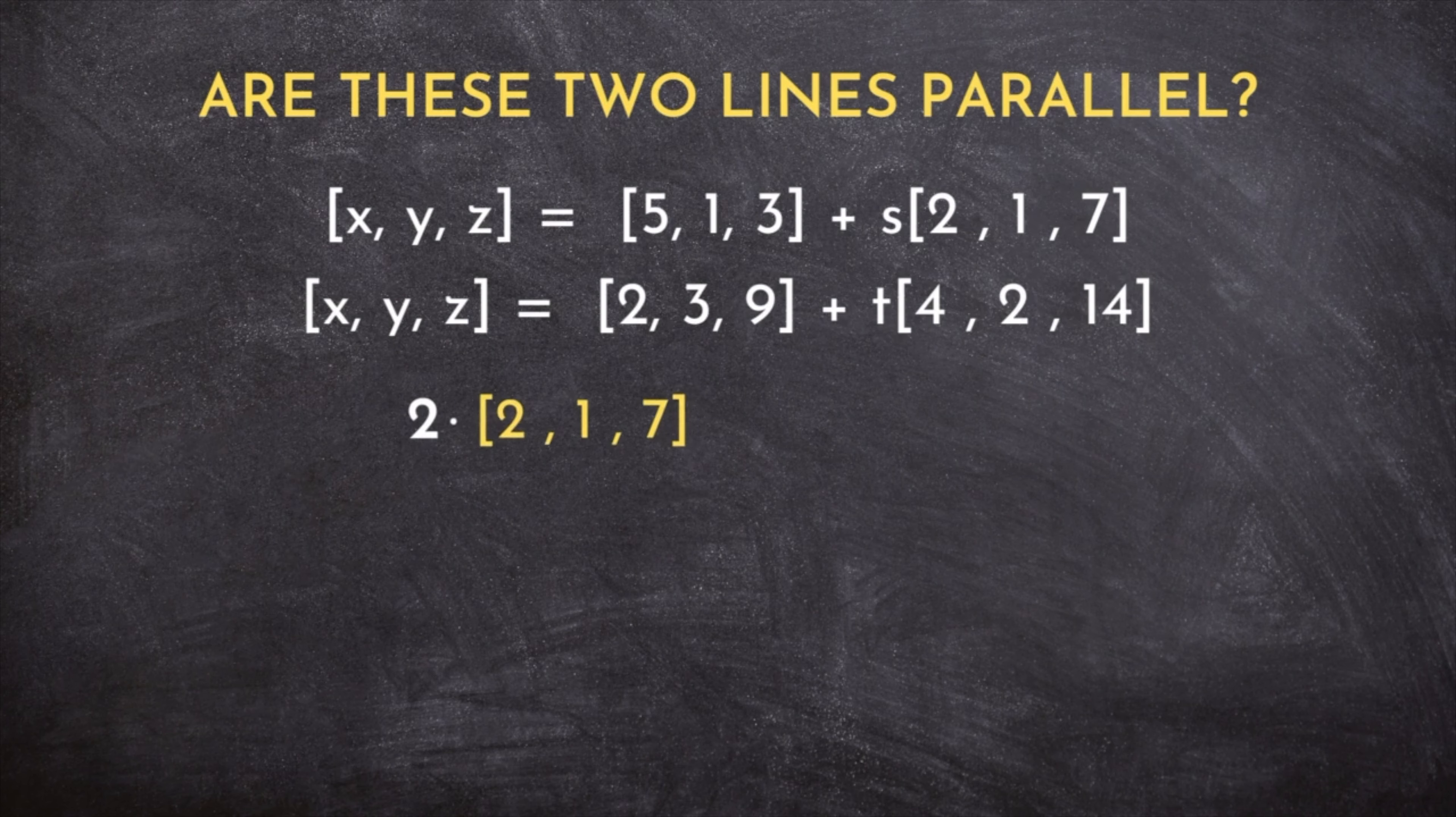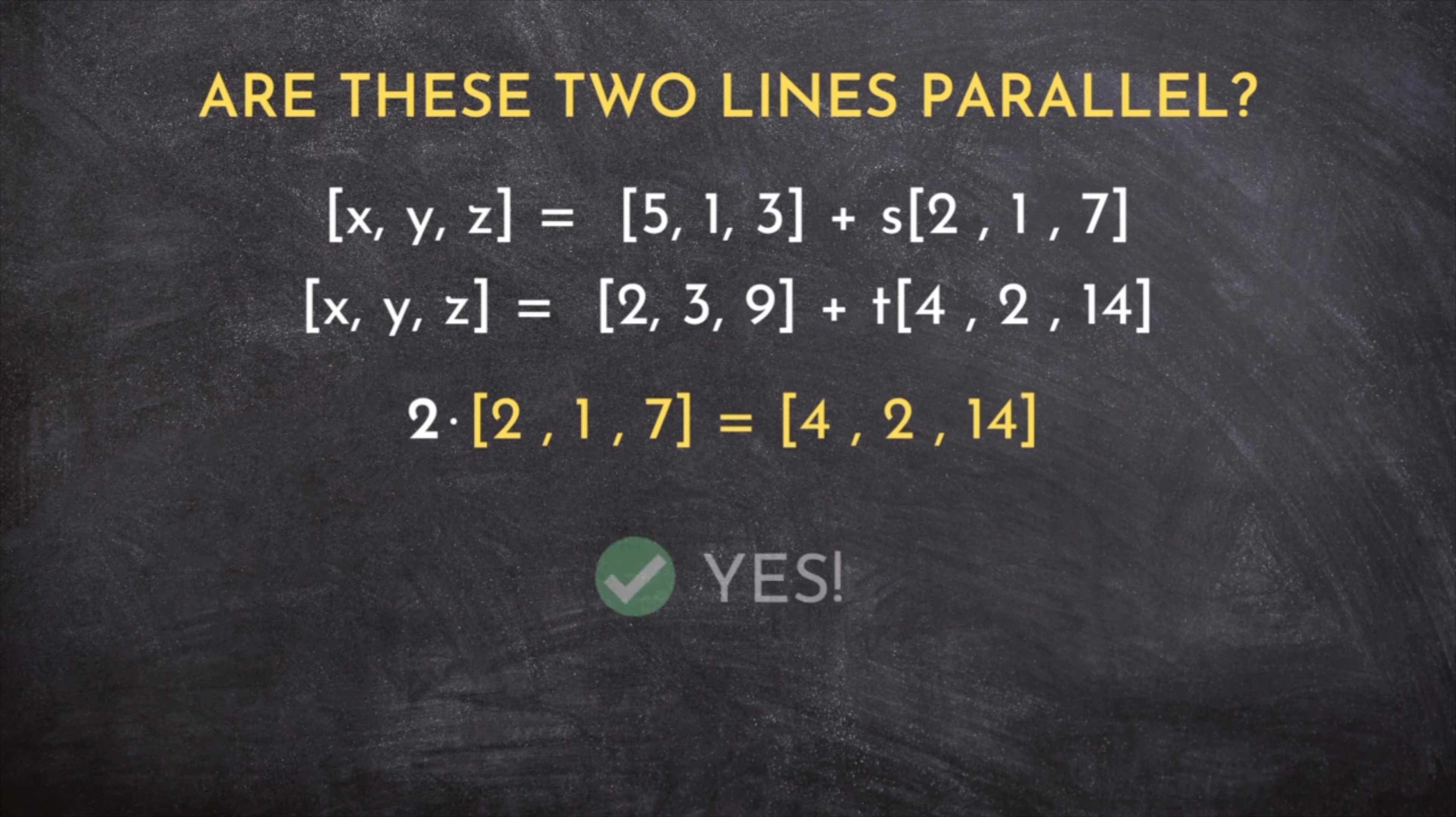There's just one more thing we have to check. Because you see, when two direction vectors are multiples of one another, all that means is that the lines are heading in the same direction. But that can happen one of two possible ways.